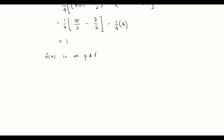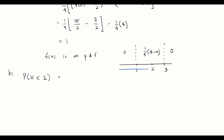For part b, we want to find P(X < 2). Drawing a number line: the function is only defined between 1 and 3. Since 2 is between 1 and 3, finding this probability requires integrating from negative infinity to 2. Since the function is 0 from negative infinity to 1, we only need to integrate from 1 to 2: ∫(1/4)(4 - x) dx.